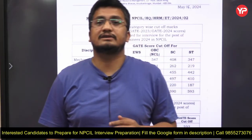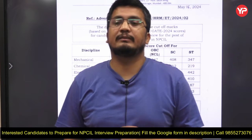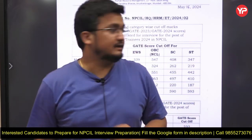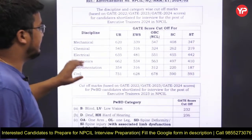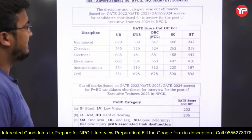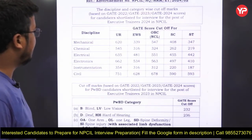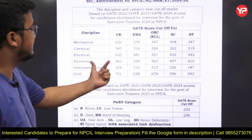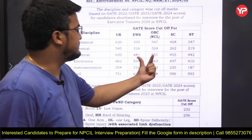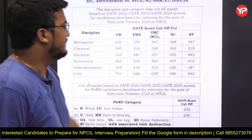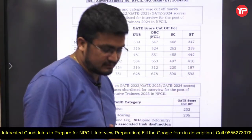In NPCIL, the final selection is purely on the basis of your performance in the interview round. The cutoff GATE score for general category is 620 in mechanical and 662 in electronics. For EWS it's 534, OBC 563, SC 497, and ST 410.